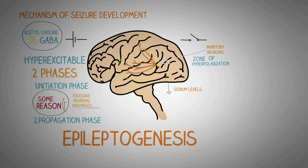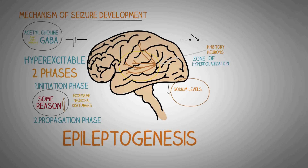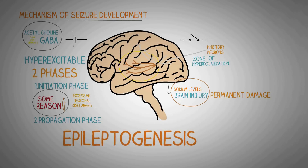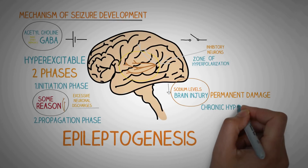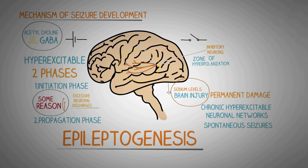One important term to understand here is epileptogenesis. In the mechanism of seizure development, we took the example of decreased sodium levels called hyponatremia, where the initiating event for the seizure can be a more permanent type of injury, like brain injury due to road traffic accidents. In this type of brain injury, the neuronal networks become chronically hyperexcitable with a permanent change in the neuronal networks, which results in spontaneous seizures in the person. This process in which a normal neuronal network is converted into a permanent chronic hyperexcitable one is called epileptogenesis.